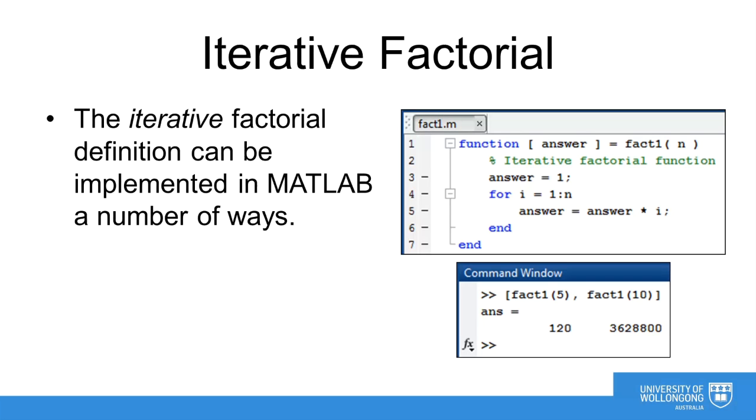Let's start with an implementation of the iterative factorial function in MATLAB. You can see here we have created a function called fact1. We've chosen this because we will be coding three different factorial functions today. Our factorial function consists of one input argument, which is the number n, and one output argument, which is our answer.